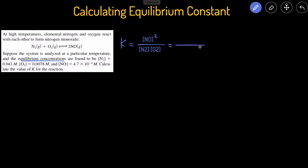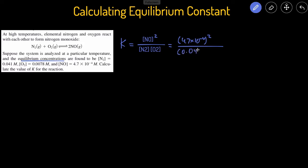Now that we have the expression, we can plug in the values. The equilibrium concentration of NO is 4.7 × 10⁻⁴, so we'll plug that in and don't forget to square it. Then we divide by the concentration of N₂, which is 0.041, times the concentration of O₂, which is 0.0078. Plugging this into the calculator gives us the equilibrium constant, which comes out to be 6.9 × 10⁻⁴.